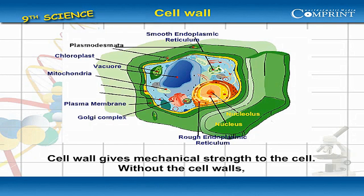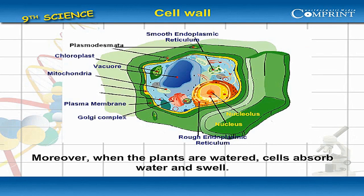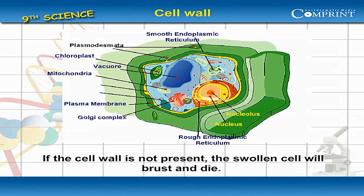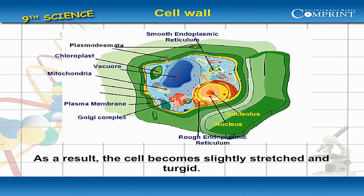Cell wall gives mechanical strength to the cell. Without the cell walls, plants cannot support their long and tall body. Moreover, when the plants are watered, cells absorb water and swell. If the cell wall is not present, the swollen cell will burst and die. As the cell wall is tough and hard, it prevents excess swelling of the cell. As a result, the cell becomes slightly stretched and turgid.